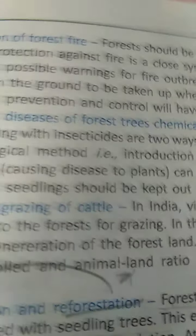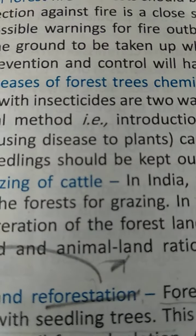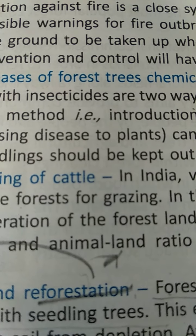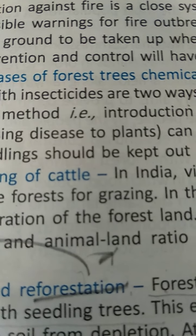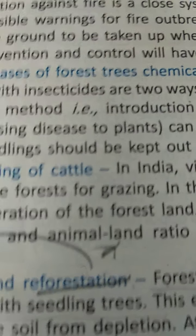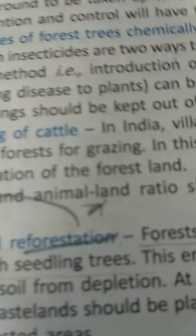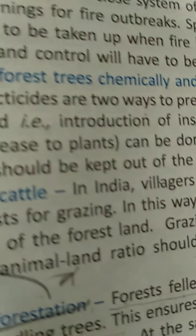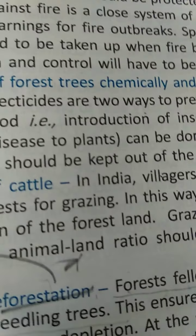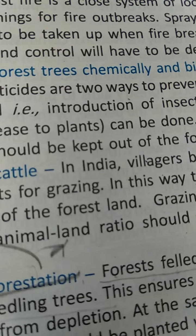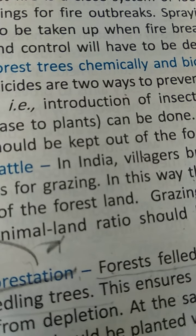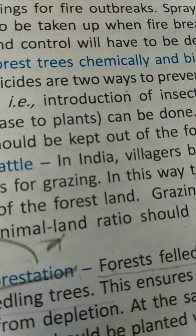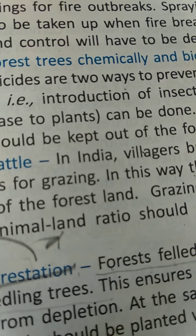The best protection against forest fire is a close system of lookout towers and air patrols to give the earliest possible warning of fire outbreaks. Fire breaks out because dry leaves, when they come in contact with each other, or when strong winds are blowing, can ignite.